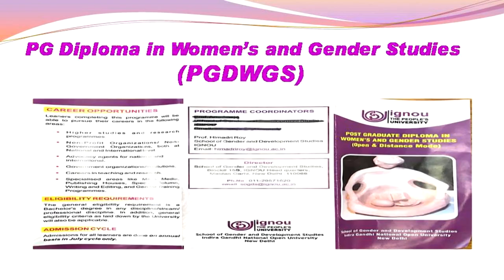The other diploma we have is a PG Diploma in Women's and Gender Studies, which is almost similar to MA in Women's and Gender Studies — it is the first year of that MA and also a standalone program. This program deals with critical interventions of history, psychology, sociology, medical issues, disability, Dalit issues, caste, class, and many other intersectionalities.